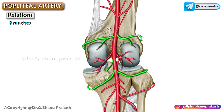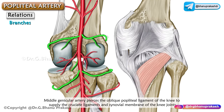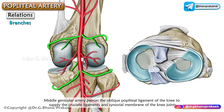The middle genicular artery pierces the oblique popliteal ligament of the knee and supplies the cruciate ligaments as well as the synovial membrane of the knee joint.